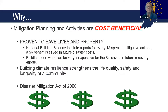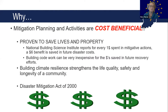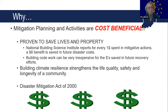We have shown that mitigation planning and activities are very cost beneficial. The most important thing they do is save lives and property. The National Building Sciences reports that for every $1 spent in mitigation, future disaster response and recovery costs are saved. We have building code work that can be very inexpensive for the dollar saved in future recovery efforts. Building climate resilience strengthens life quality, safety, and longevity of a community. Preparing for climate resilience, for example for flash flood events, will increase the vitality of your local communities.